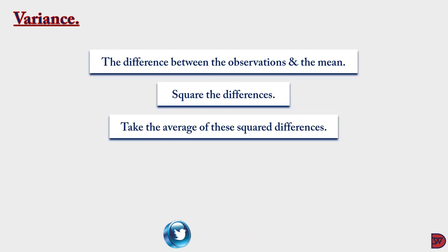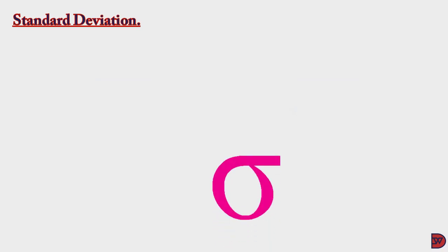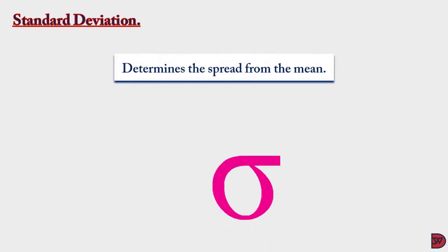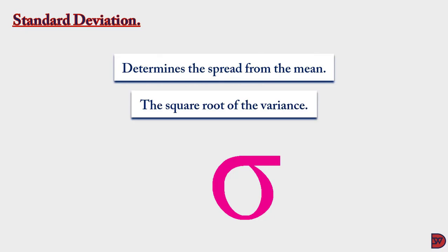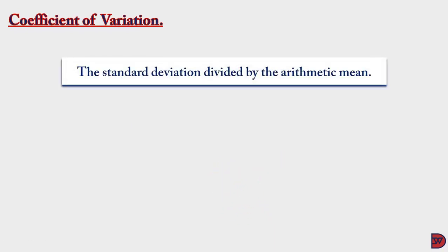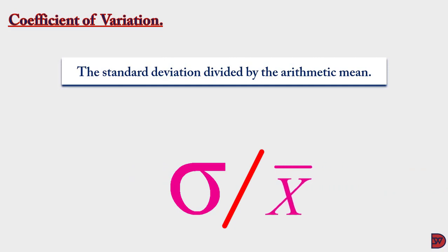If the variance is lower, the values are closely clustered around the mean. Standard deviation also measures the spread of values from the mean; the difference is that standard deviation takes the square root of the variance. The coefficient of variation is the ratio of the standard deviation to the arithmetic mean — you get it by dividing the standard deviation by the arithmetic mean.